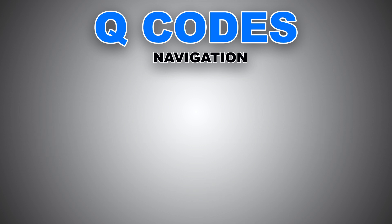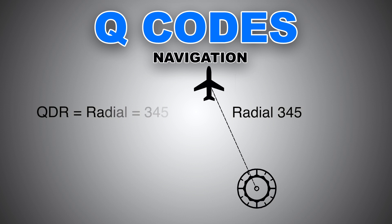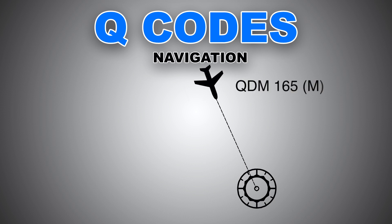Let's have a look at another example. The aircraft is northwest of the station — find the QDR. To find the QDR, all you need to do is figure out what radial you are on, and that becomes your QDR. In this example, the aircraft is on the 345 radial, so the QDR is 345. Now, if you would like to fly to this station, you will need to fly the QDM, which is the reciprocal of 345. If you said 165, then you're right — 165 will take us directly to the station.